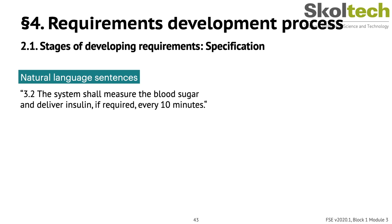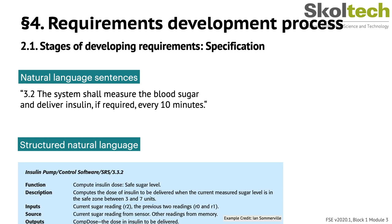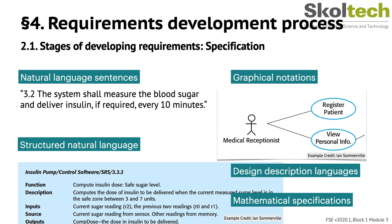Structured natural language is a way of writing requirements where the freedom of the writer is limited and all requirements are written in a standard, tabular manner — for example, a requirement to compute insulin dose. Graphical models supplemented by text annotations are also used to define functional requirements; UML use case and sequence diagrams are commonly used. Other approaches include design description languages and mathematical specifications.